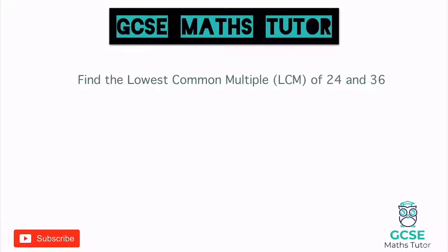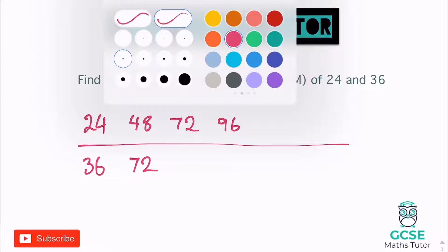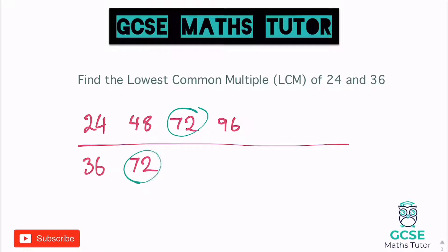Moving on to the next one: find the lowest common multiple of 24 and 36. So let's have a look at 24 and 36. Let's do a few for 24: 48, then 72. Let's do one more: 96. Now let's do some of the 36s. Add 36 to 36, we get 72. Oh, there we go — straight away we've got our lowest common multiple. It doesn't always appear this quickly, but some of these first ones are going to do that.